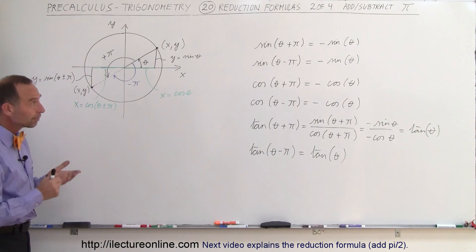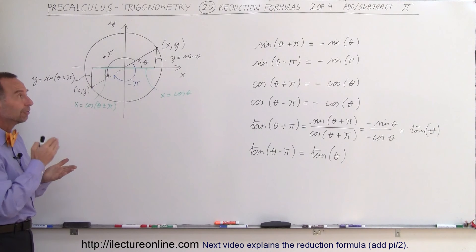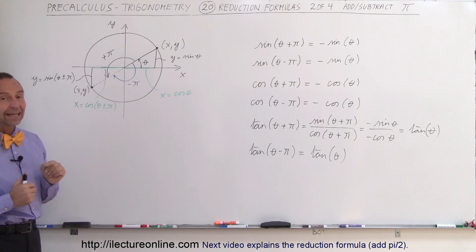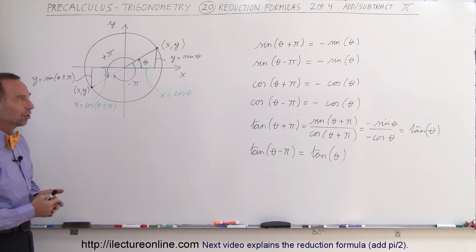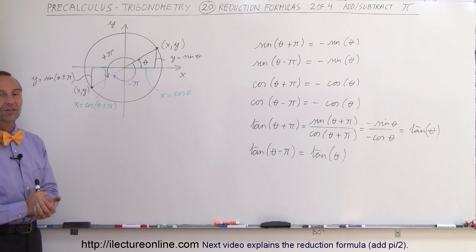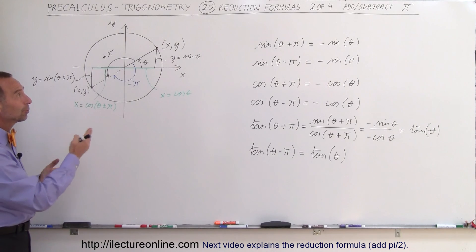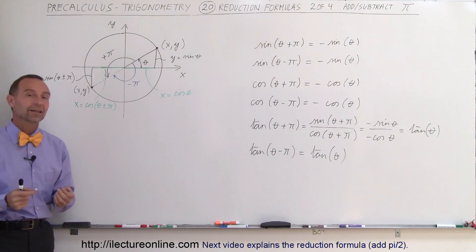So there you go. If you add or subtract pi from a sine or cosine function, you get the negative function. And if you add or subtract pi from the tangent function, you get the very same function. It doesn't change at all because the two negatives cancel out. And that's how we deal with the reduction formula when we add or subtract a single pi.